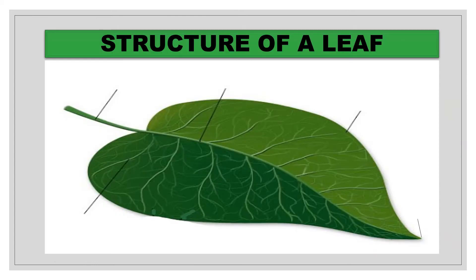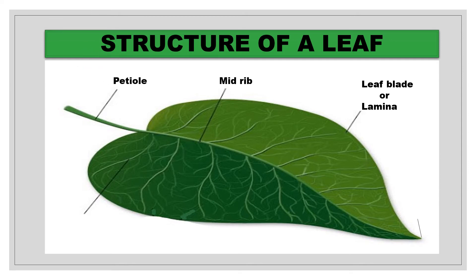Leaves are the green, flat part of the plant. They are many in number. The flat, broad part of a leaf is called the leaf blade or the lamina. A thick line that runs across the middle of the leaf is called the midrib. The small stalk that attaches the leaf to a branch is called the petiole. Many other lines emerge from the midrib — these are called veins. The tip of the leaf is called the apex.